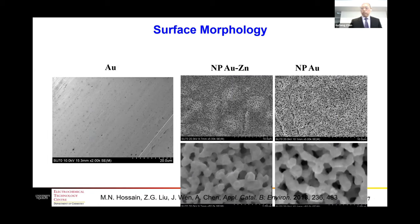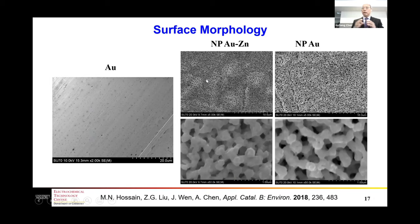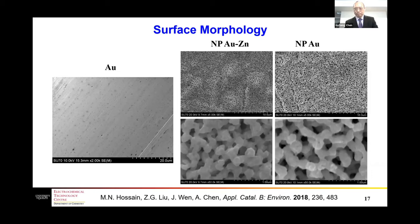Here are the SEM images. We start from a smooth gold surface, then form the nanoporous gold-zinc alloy shown at low and high magnification. After removing the zinc, we still see the nanoporous gold structure. We can observe that the pore size increases when going from nanoporous gold-zinc to nanoporous gold.